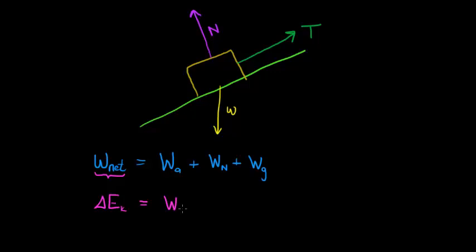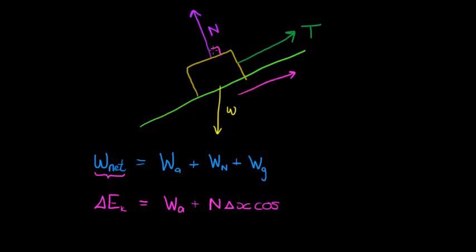The work of the normal force is the normal force times the displacement delta X times cos of the angle. If it's moving up the slope, the angle between the displacement delta X and the normal force is 90 degrees.